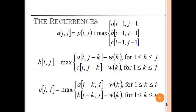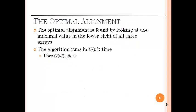This is the following recurrences that may occur: the three possibilities at position A, B, and C for three scores A, B, and C. The optimal alignment is found by looking at the maximal value in the lower right of all three arrays. The algorithm runs in order of n cubed time and uses n squared space.